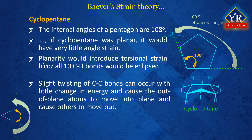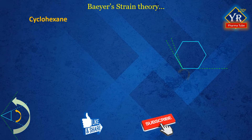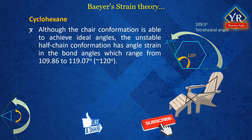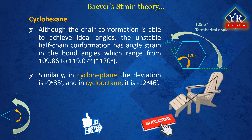Cyclohexane. A planar cyclohexane ring would experience angle strain because the internal bond angle between the carbon atoms would be 120 degrees, and torsional strain because all the hydrogens on adjacent carbon atoms would be eclipsed. Although the chair conformation is able to achieve ideal angles, the unstable half-chair conformation has angle strain with bond angles ranging from 109.86 degrees to 119.07 degrees. In reality, cyclohexane adopts a puckered conformation called the chair form, which is more stable than any other possible conformation. The chair conformation is so stable because it eliminates both angle strain and torsional strain. The results from the above calculations are summarized in the table given.